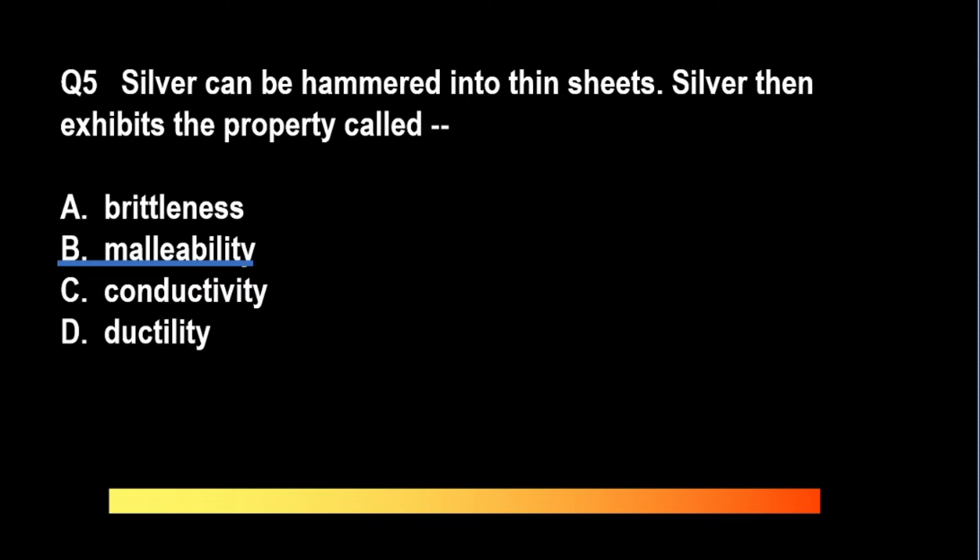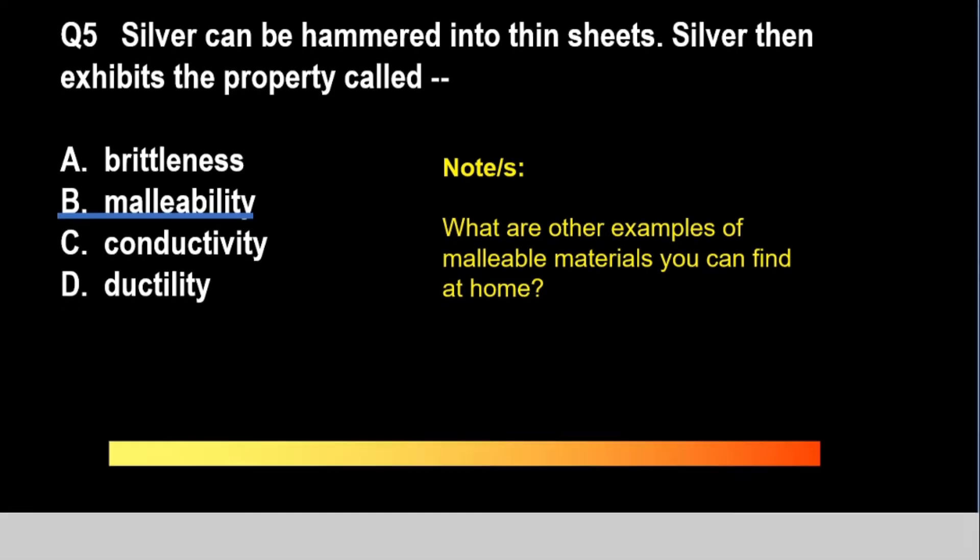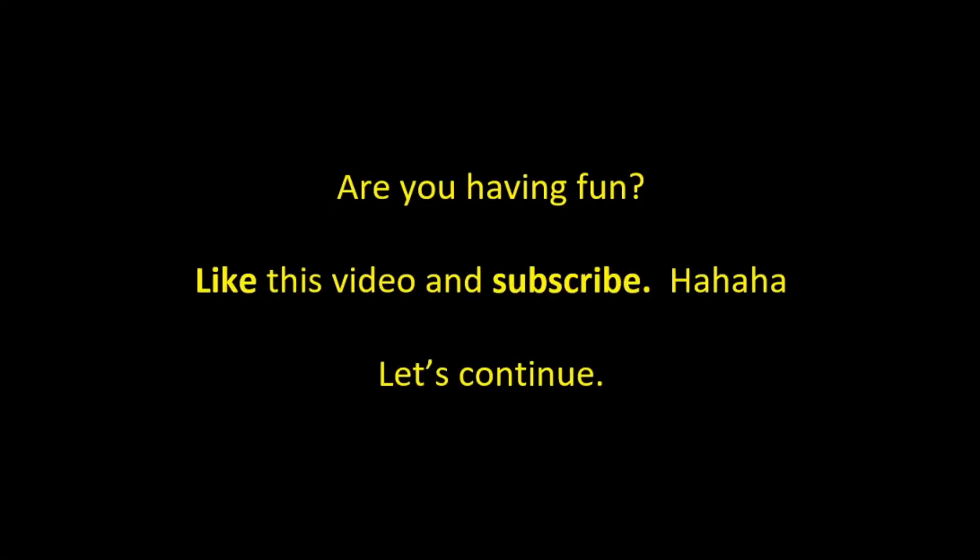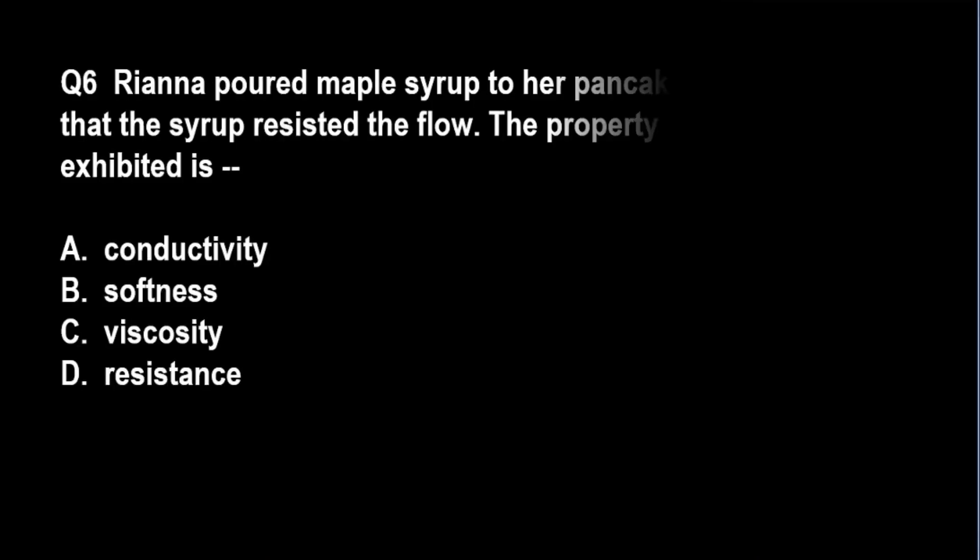Question number six: Rihanna poured maple syrup to her pancake. She observed that the syrup resisted the flow. The property of matter exhibited by the maple syrup is A: conductivity, B: softness, C: viscosity, and D: resistance.